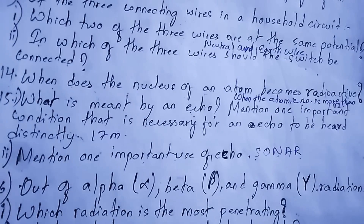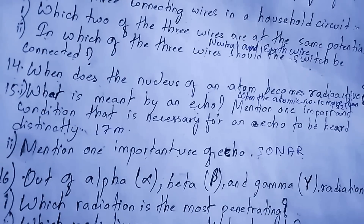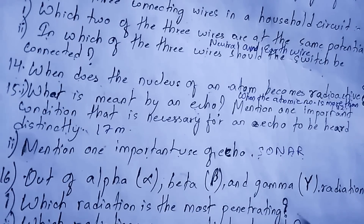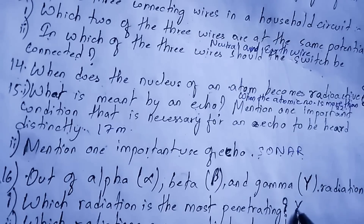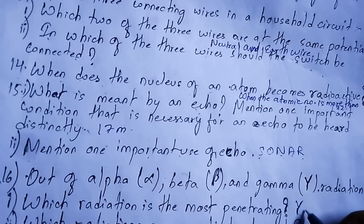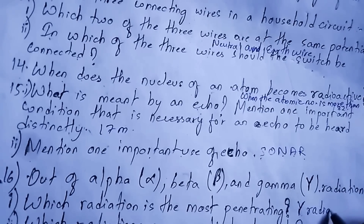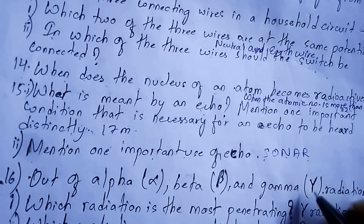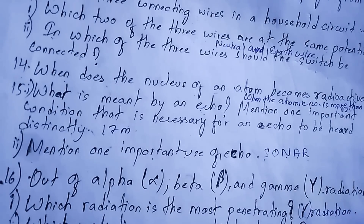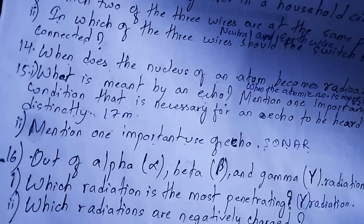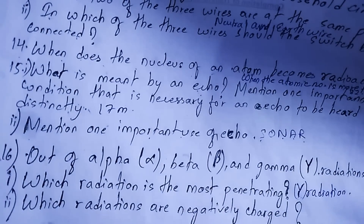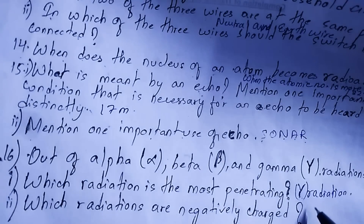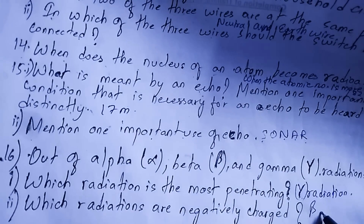Which radiation is the most penetrating? Gamma radiation is the most penetrating. Which radiations are negatively charged? Beta radiations are negatively charged.